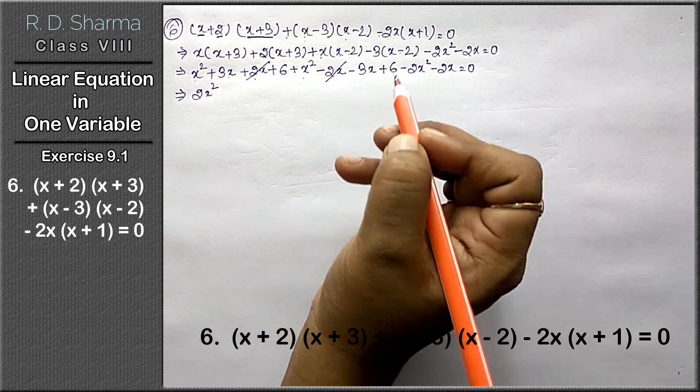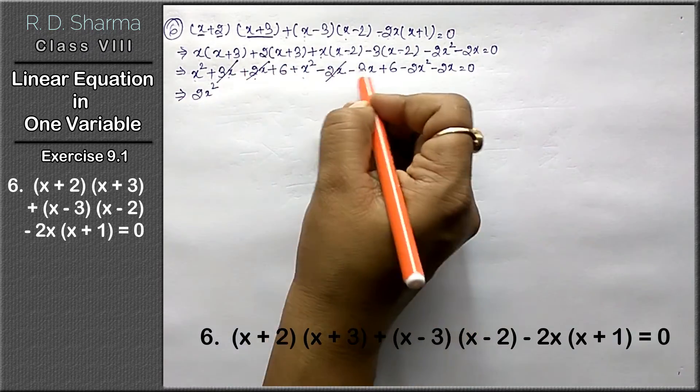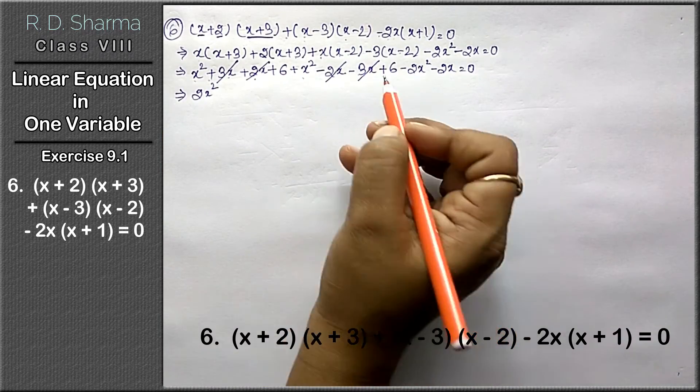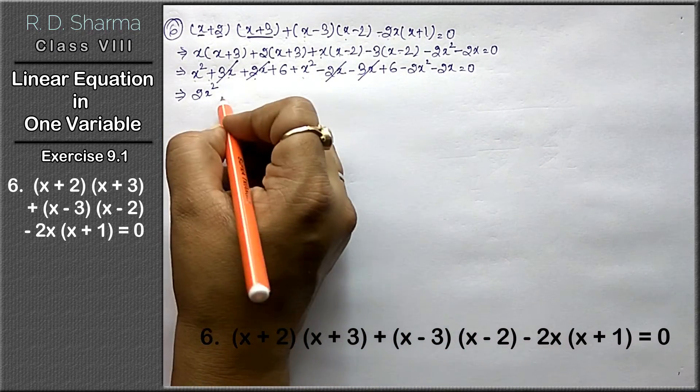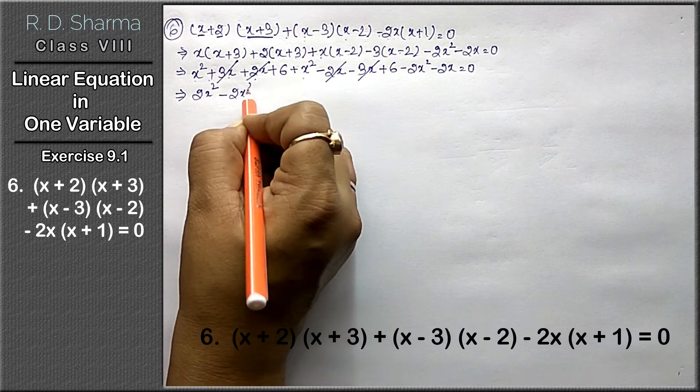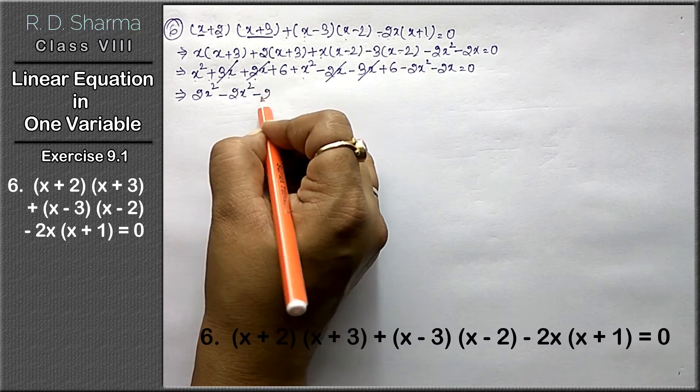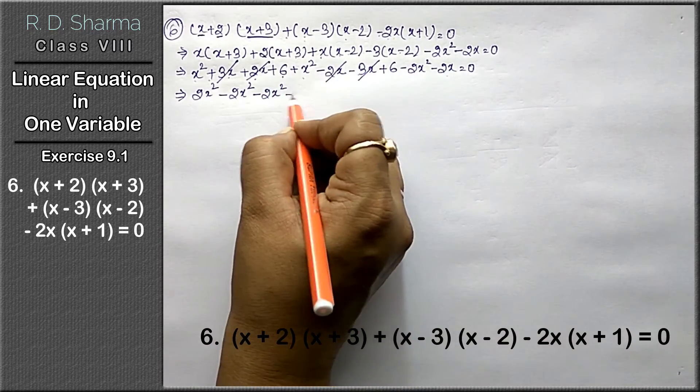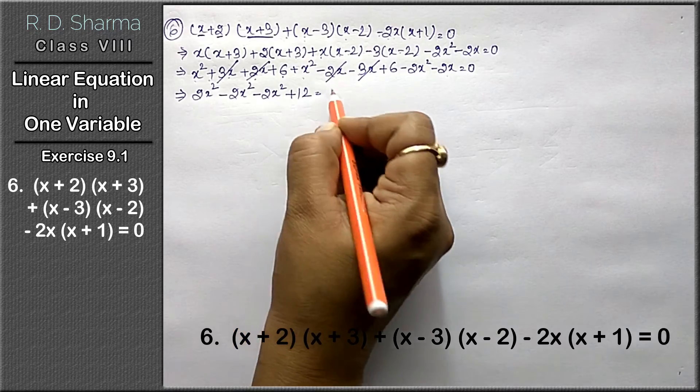Now x² plus x² is 2x². 3x plus 2x is 5x, this 2x will get cancelled with minus 2x. One 6 has positive sign, one has negative sign, so 6 minus 6 is 0. Then 2x² minus 2x² equals 0.